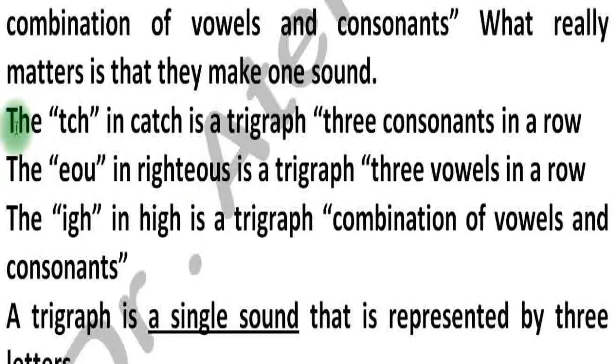The TCH in catch is a trigraph. There are three consonants in a row. The E-O-U in righteous is a trigraph. There are three vowels in a row.